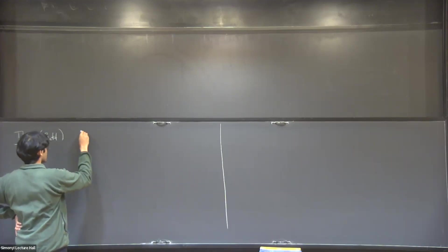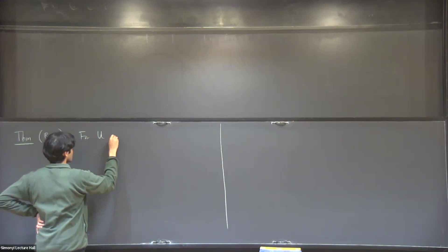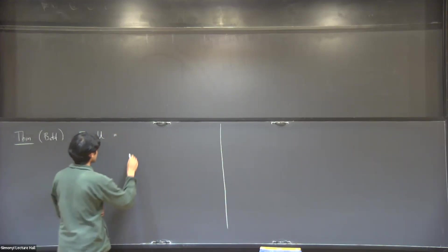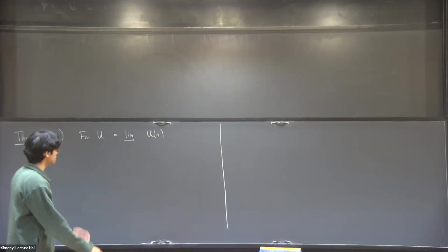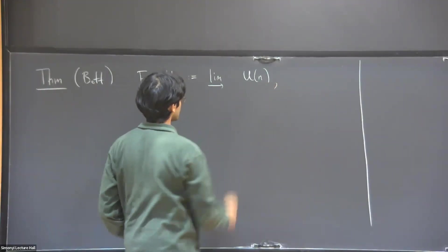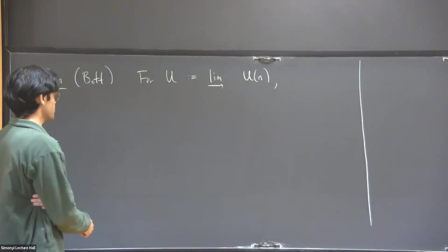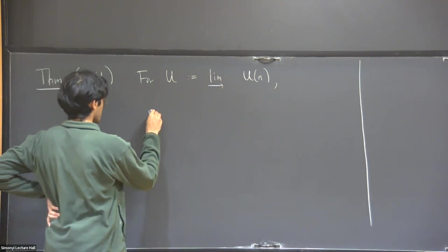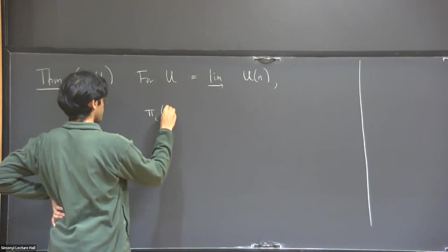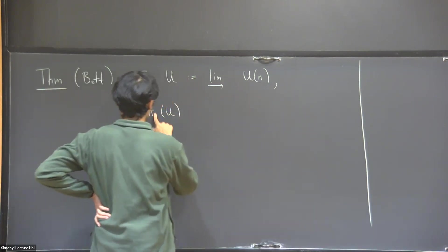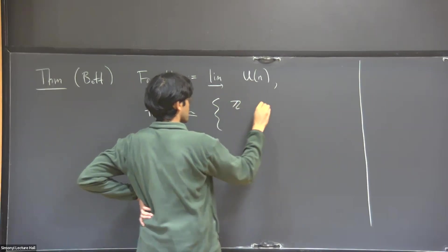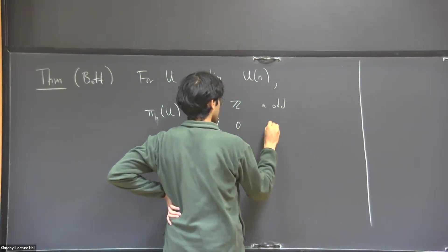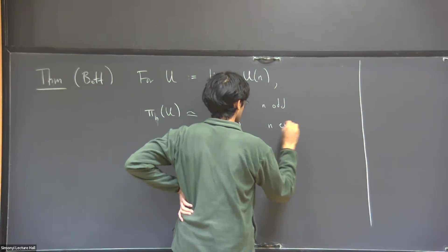That says that if I let U be the infinite unitary group, so that means the direct limit of all the n by n unitary groups with natural transition maps, then that's some topological group, and Bott computed the homotopy groups of that. So the nth homotopy group is Z if n is odd and zero if n is even. There's a kind of periodicity.